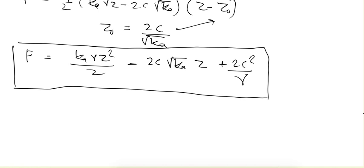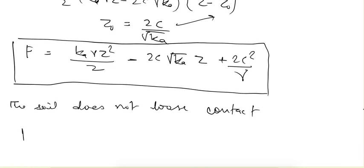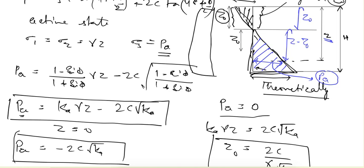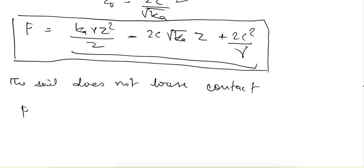The examiner can ask: what if the soil does not lose contact? In that case the force we just found applies when the soil loses contact, using the blue pressure diagram. If it does not lose contact, the pressure in the tension zone (green) is balanced by the corresponding positive pressure, so only the remaining pressure — the blue part — acts on the wall.